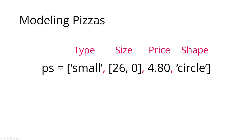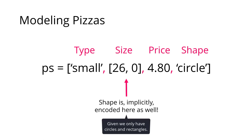We are going to model an individual pizza — for example, the small pizza — as a list with four elements: it will have the type as a string, it will have a size as a list with the diameter and, if it's rectangular, also the width and length, then we will have the price, and we will also have the shape. The shape is actually implicitly encoded in the size — if the second value is zero it has to be a circle, if not it's rectangular — but I've added it explicitly here to make things easier and to allow us to extend our program after the fact.